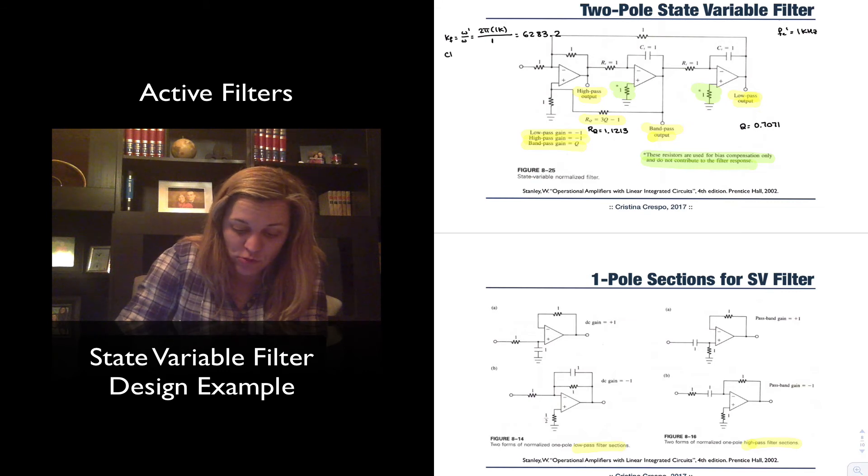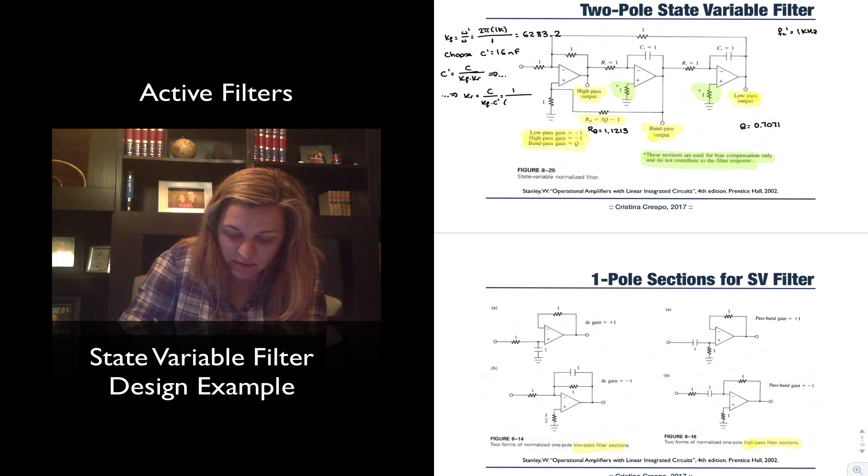Then let's imagine that I chose my C prime to be equal to 16 nF. And since I know that C prime is equal to C divided by kF times kR, I can figure out my kR from here, which will be equal to C divided by kF times C prime. I'm not going to enter the values, otherwise they're going to take too much room. But basically, C, which will be equal to 1 divided by kF times C prime, which is 16 nF, and that gives me 10 to the 4.